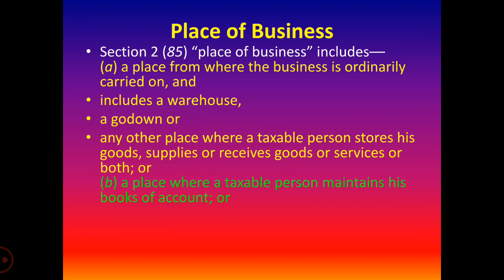Place of business also includes a place from where the taxable person stores his goods and receives goods or services or both. It includes a place from which an ordinary business is carried on — such as a warehouse, a godown, or a storage facility — for the supplies to be made by the taxable person in the ordinary course of business or in the furtherance of business.